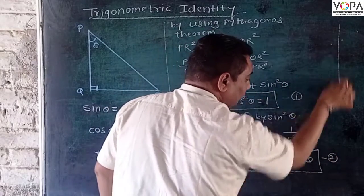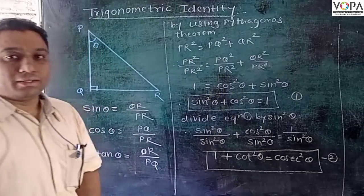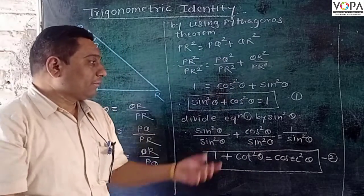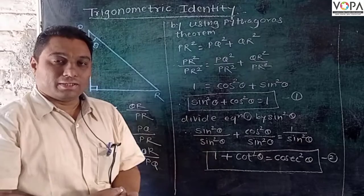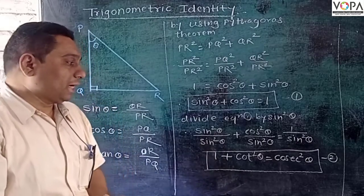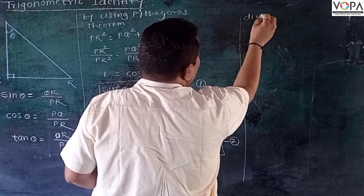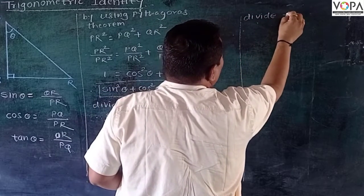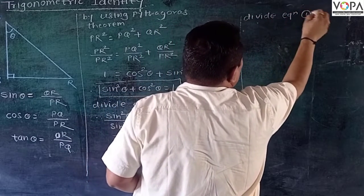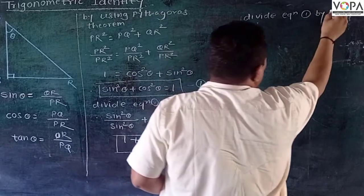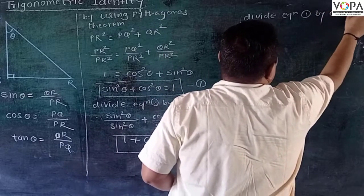Now, to calculate the third identity, I divide this equation 1 by cos square theta. So divide equation 1 by cos square theta.